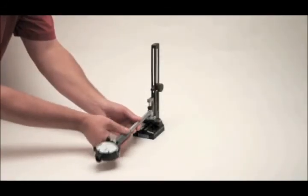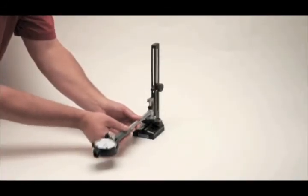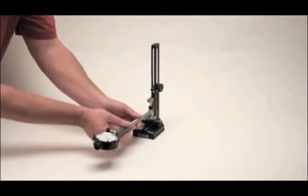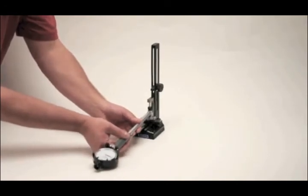Rock the bore gauge to find the reversal point on the dial indicator. This is the point that the dial indicator reads the lowest point between the base and the top anvil.